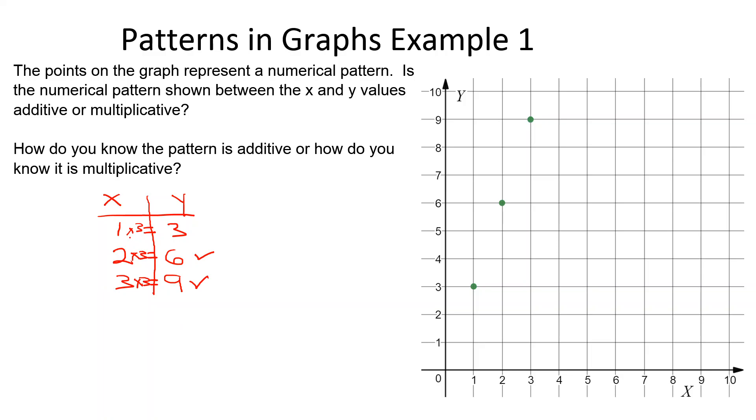Since we can multiply x by the same number every single time in order to find the corresponding y value, that means it must be a multiplicative pattern. We know it's multiplicative because we multiply the x values by a number in order to find the y values.